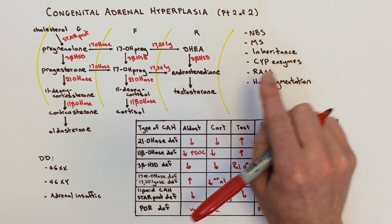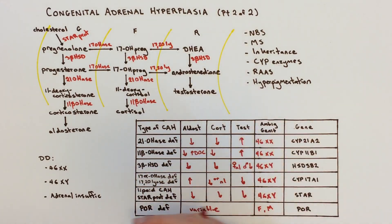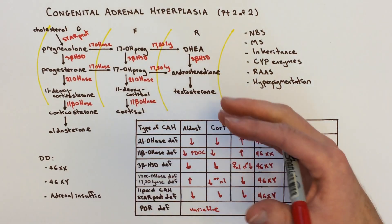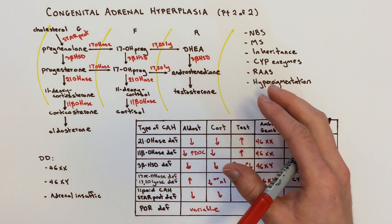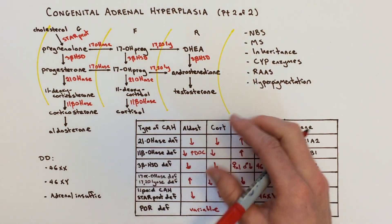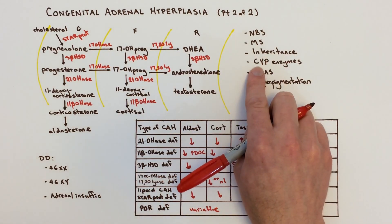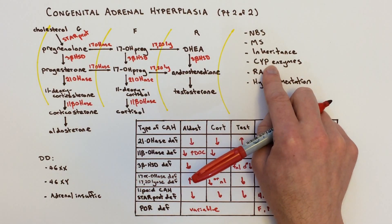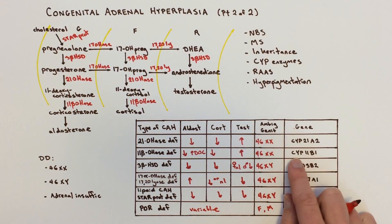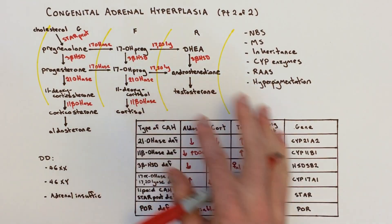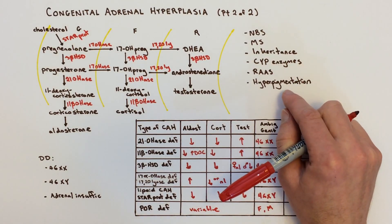The inheritance pattern for all of these is autosomal recessive. You'd get a hint from the fact that they're all enzyme deficiencies — most enzyme deficiencies occur in an autosomal recessive fashion, though not universally; there are some X-linked and even dominant enzyme deficiency disorders. CYP refers to cytochrome P450, which appears in the gene names for several of these enzymes, so keep that in mind when you encounter it in your reading.